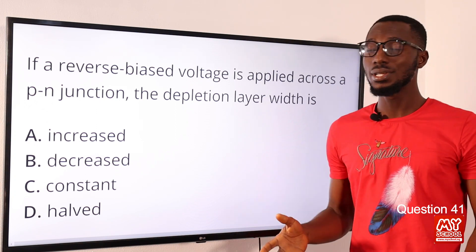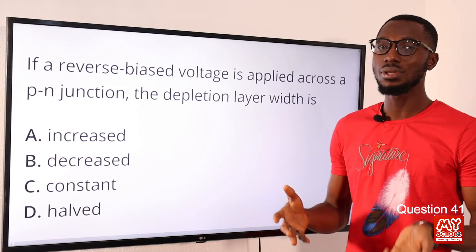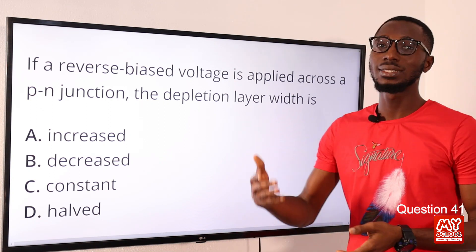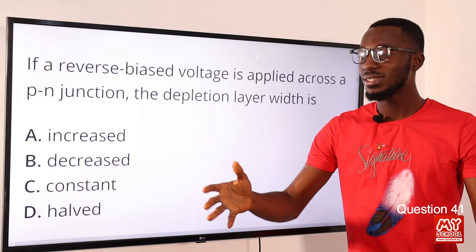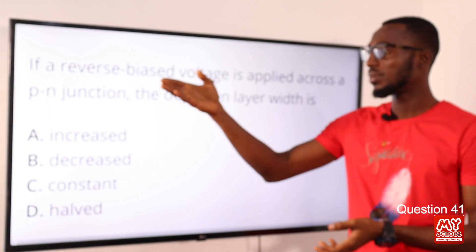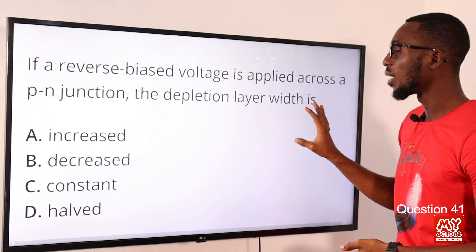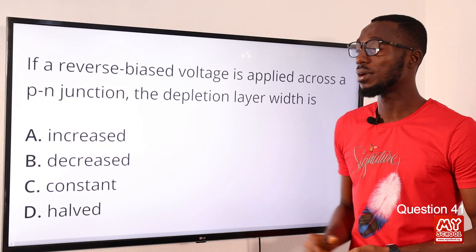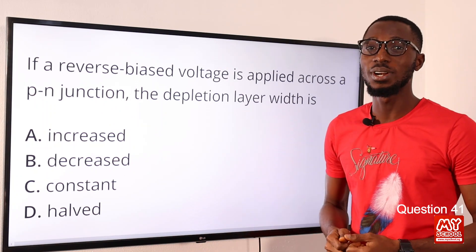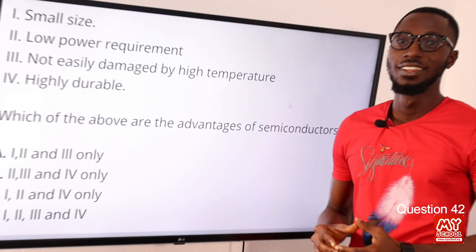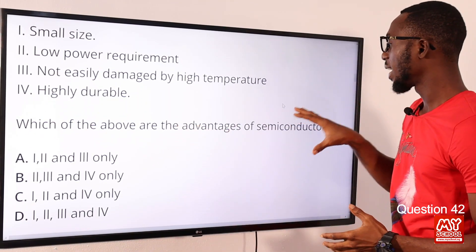Question 41: If a reverse bias voltage is applied across a P-N junction, the depletion layer width increases until the potential difference across it equals the external bias voltage. So the depletion layer widens or increases. The correct option is option A — the depletion layer width is increased.